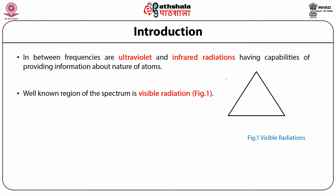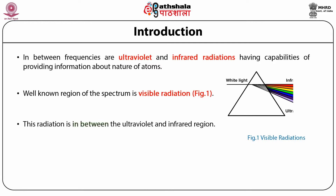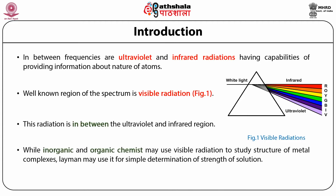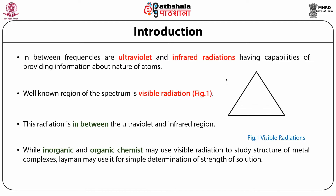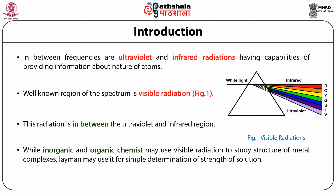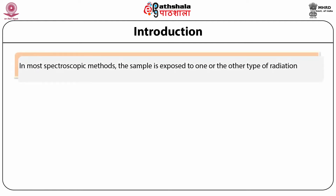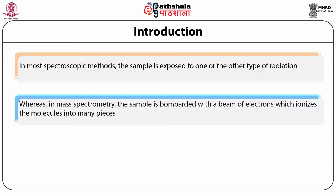The well-known region of the spectrum is visible radiation, which is between the ultraviolet and infrared regions. While inorganic and organic chemists may use visible radiation to study the structure and stability of transition metal complexes and organic molecules, the layman may use it for a simple determination of the strength of a colored solution — by simply observing different colors, one may see which solution is concentrated and which is diluted. In mass spectrometry, the sample is bombarded with a beam of electrons which ionizes the molecule into many pieces, and the spectrometer sorts the electrically charged fragments in order of their mass-to-charge ratios.